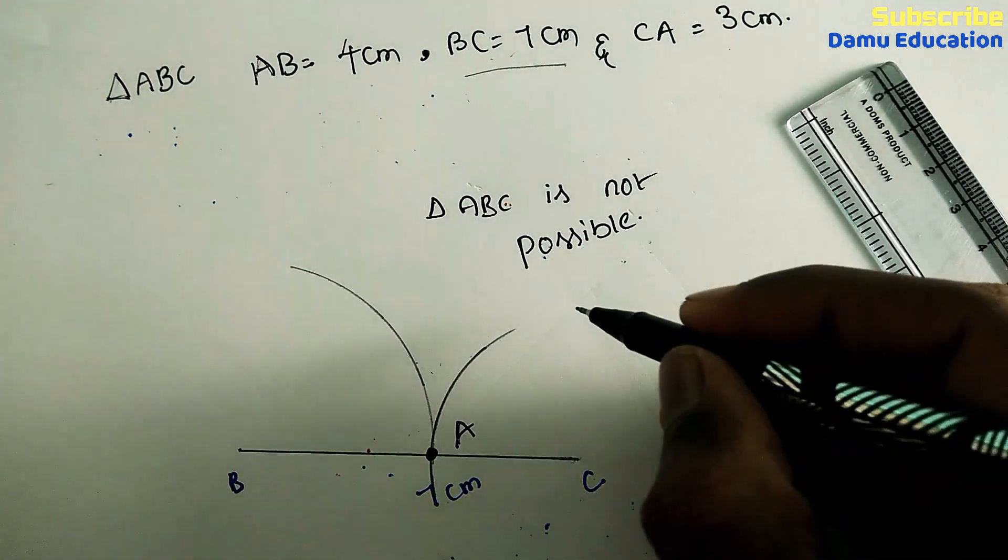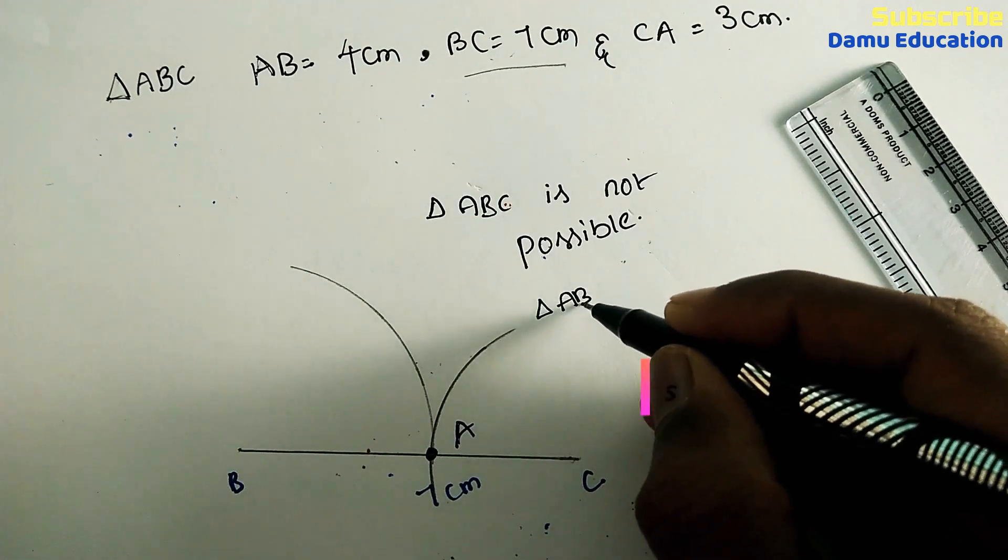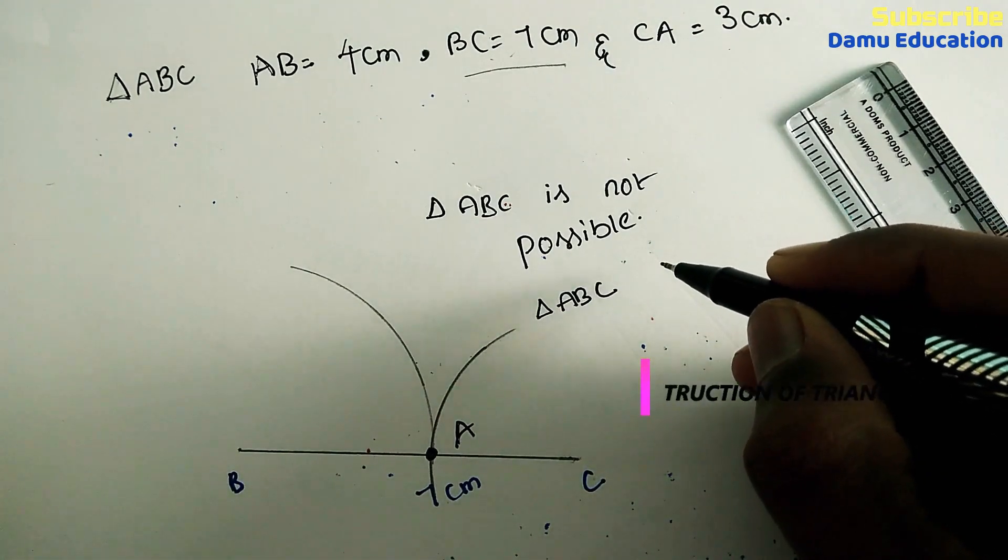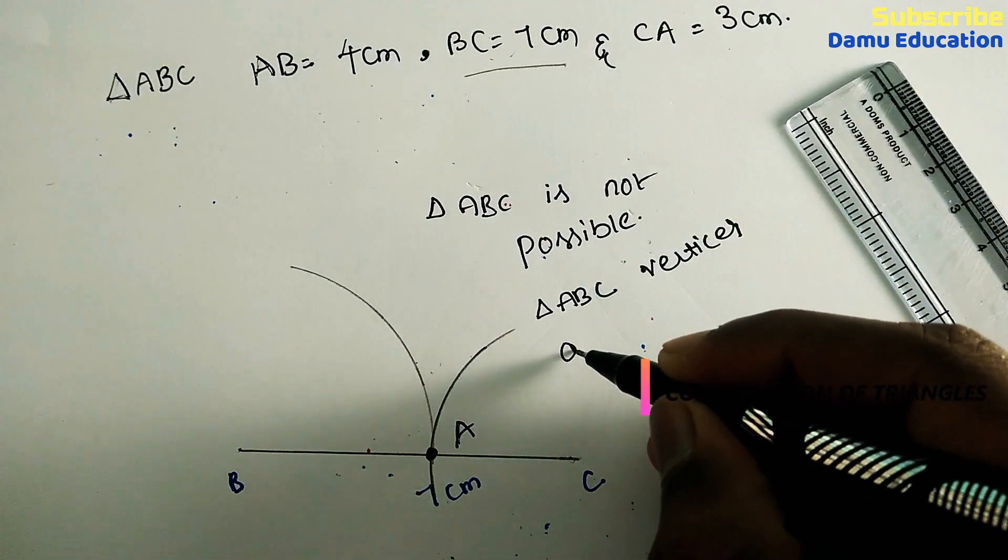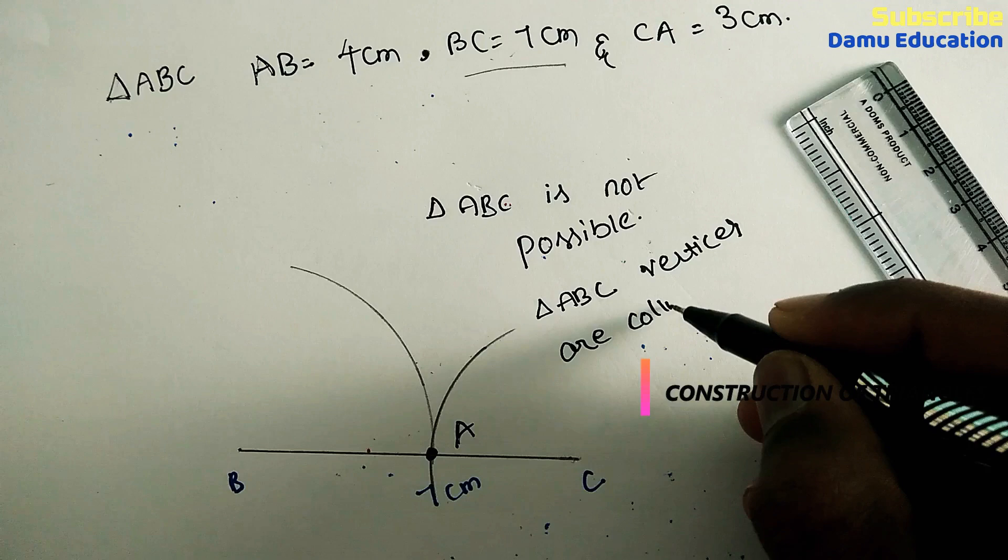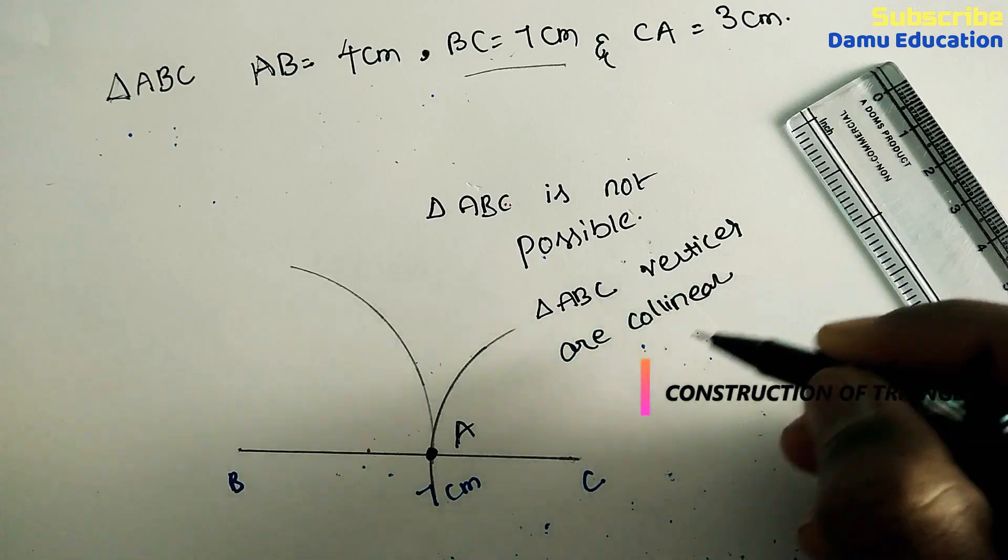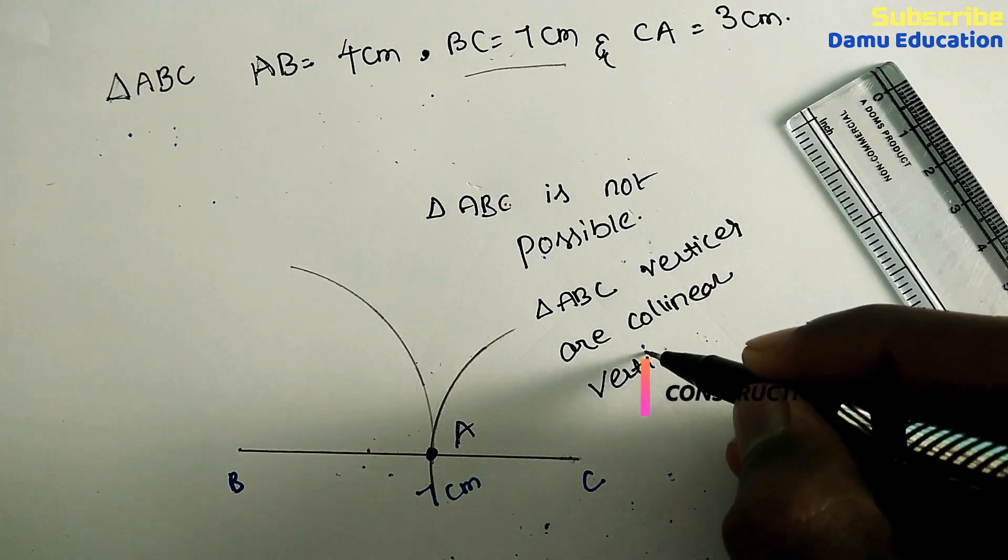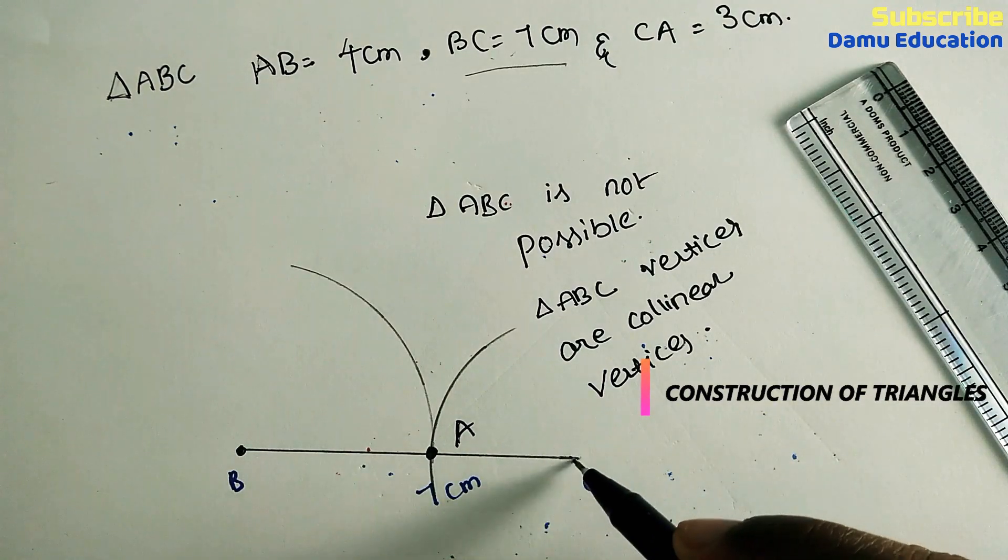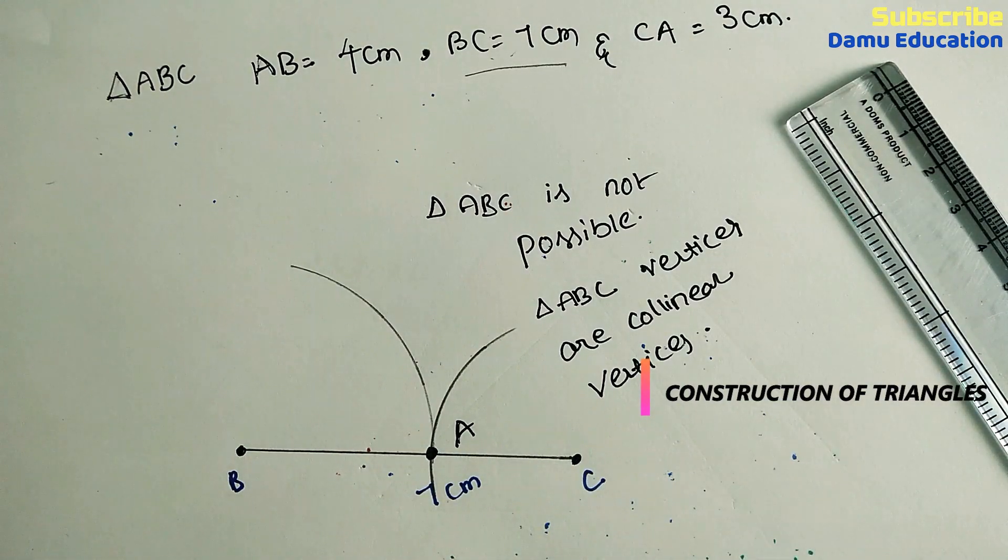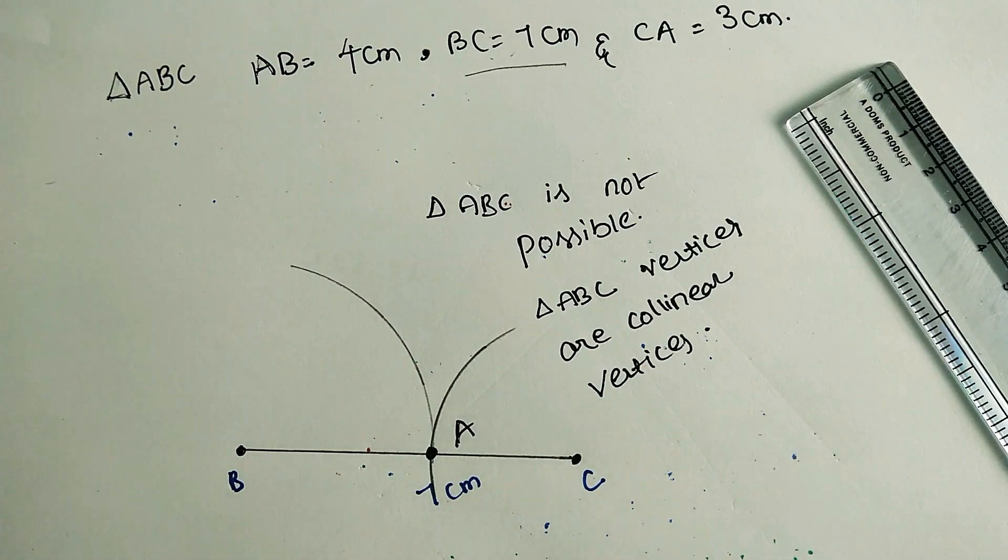Why? Because a triangle ABC has collinear points or collinear vertices, which means all points are on the same line. All points are on the same line, so this triangle is not possible.